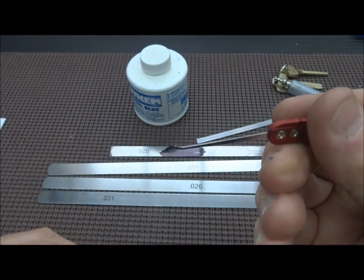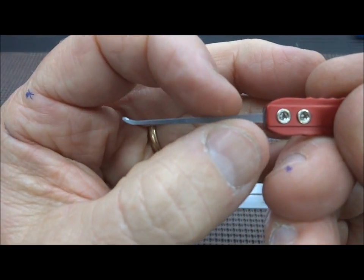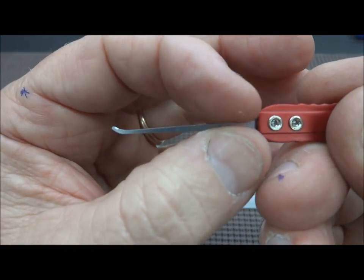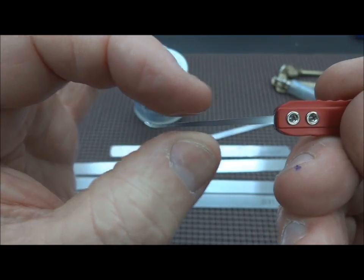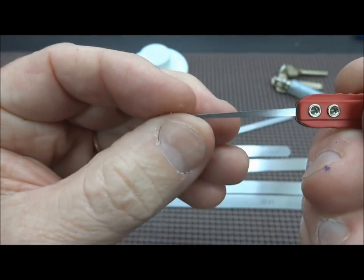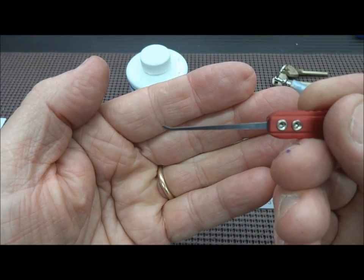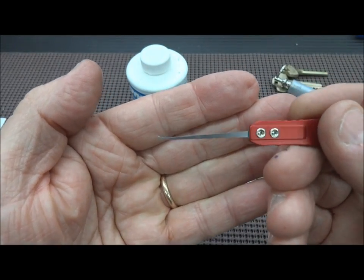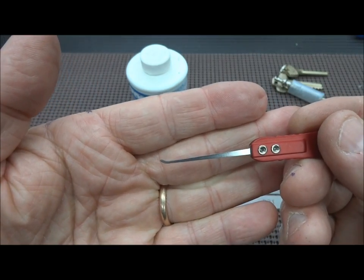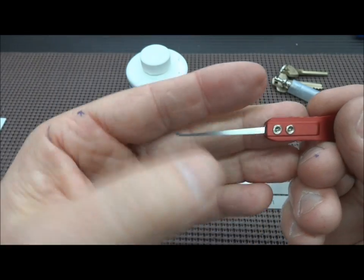When we make the picks, we need to really pay attention to the thickness. Obviously, the thinner it's going to be, the easier it's going to bend. The longer it is and the thinner it is, the less feedback you're going to get—it's going to de-amplify that feedback.